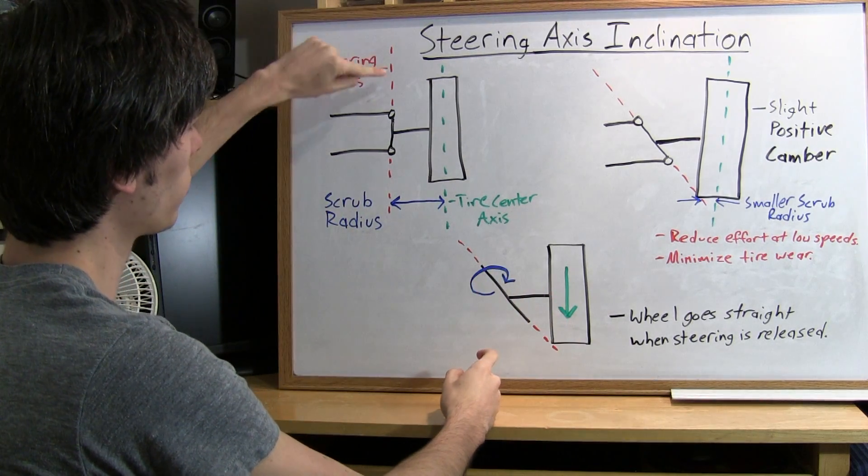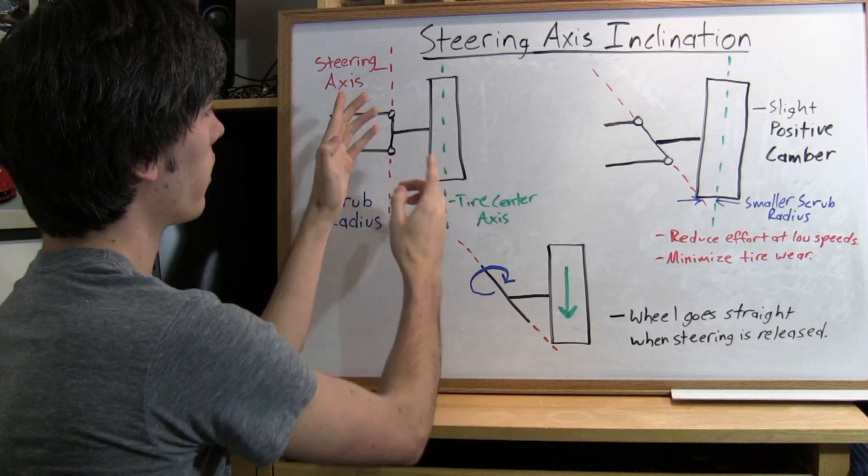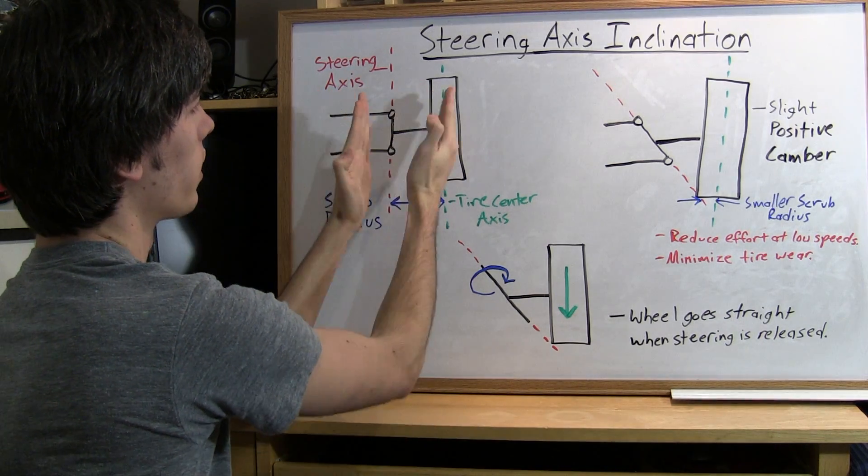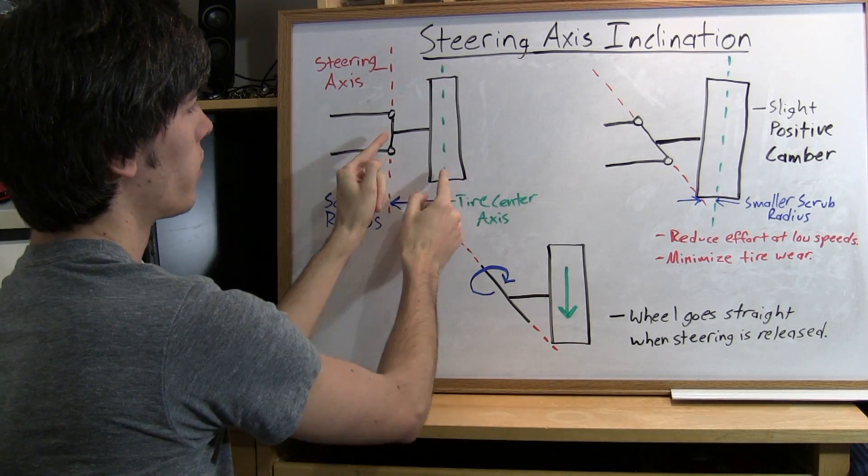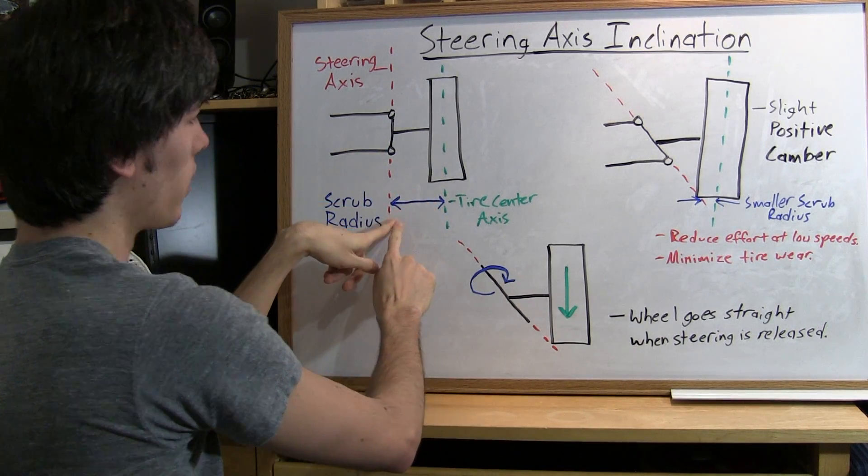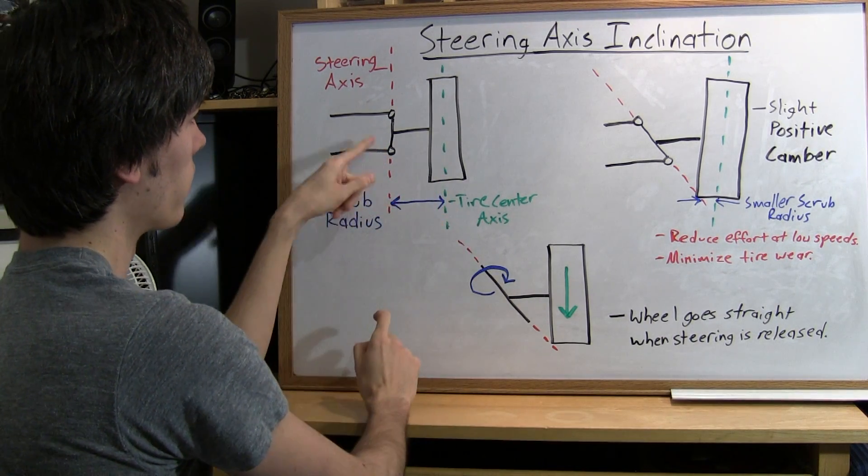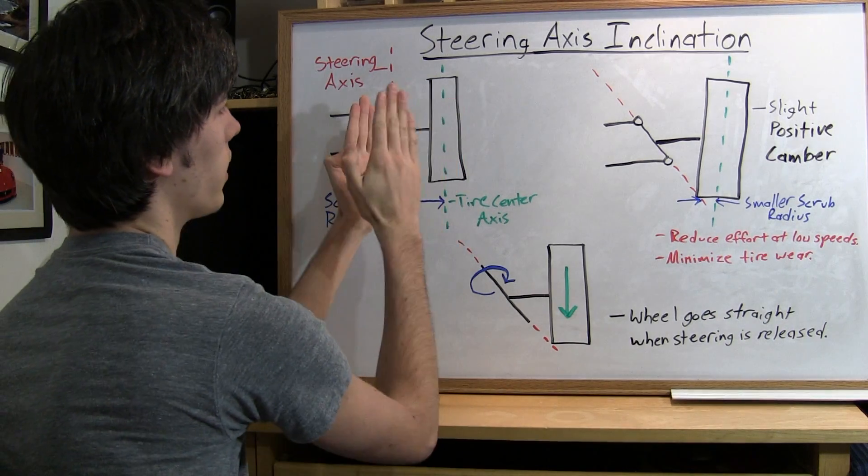So you have this dotted red line here and this is going to be what you'll be rotating the wheel about. As you can see there's a distance between the center of the tire and the center where the steering axis is.